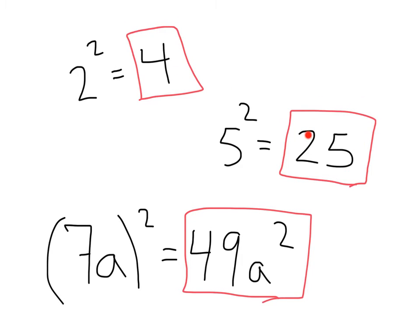5 squared, 25. 25 is a square. 7a squared. 7a times 7a, 49a squared. Here is another square.